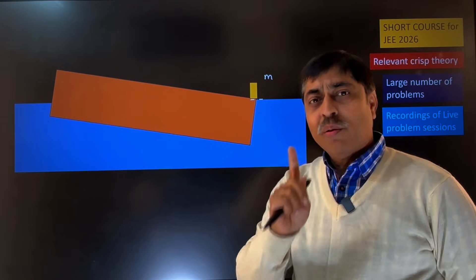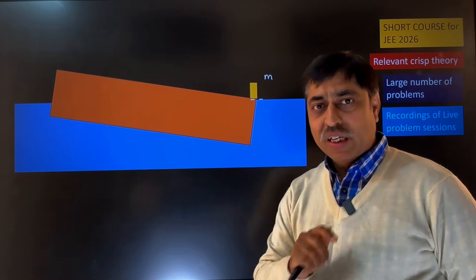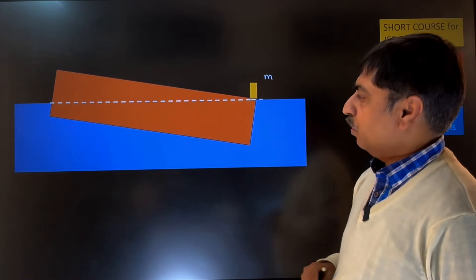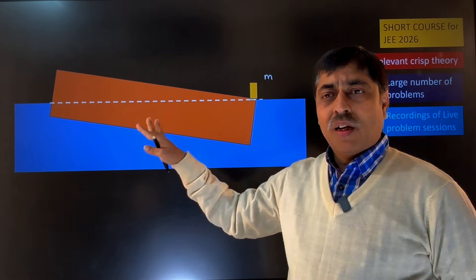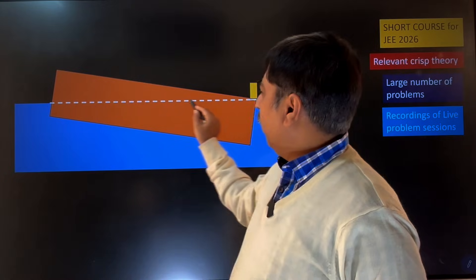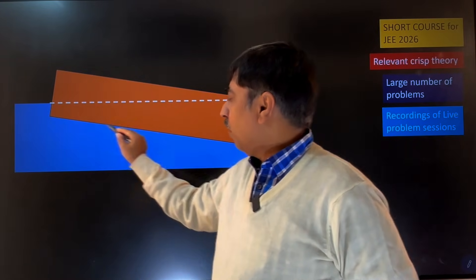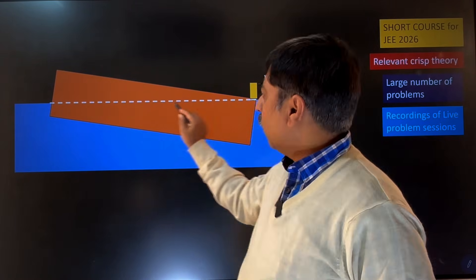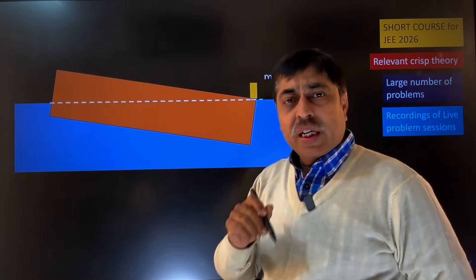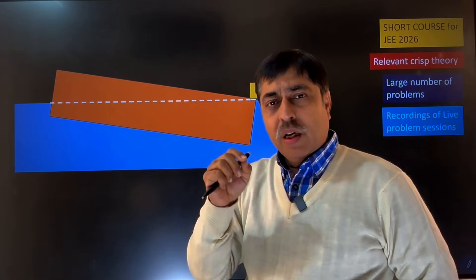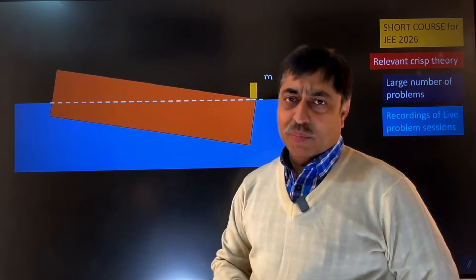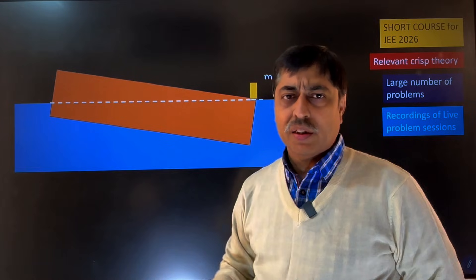If you have understood the question, give it a pause and try it on your own. Here I am again proceeding with my solution. How to write the buoyancy force in this situation? The buoyancy force is the weight of the displaced volume of water. I will write it in a slightly different way — first assume that the complete bar is submerged, just assume that the complete bar is submerged.